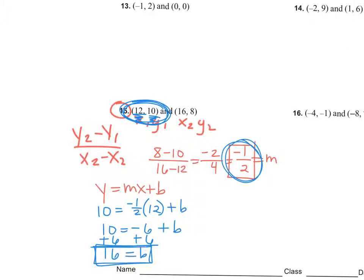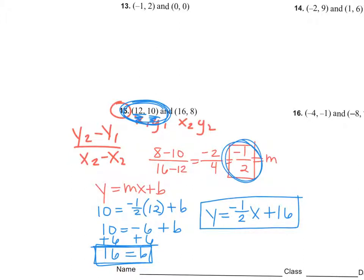So what is slope-intercept form right now? y equals negative one half x plus 16. Hopefully you wrote that all down because you're going to do that same process on those other three.